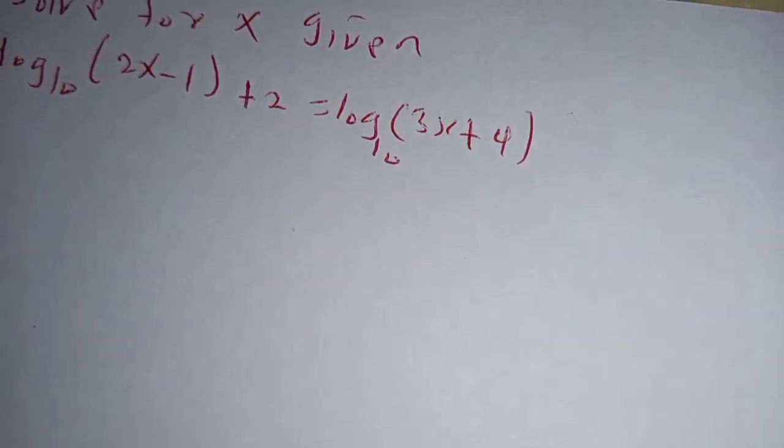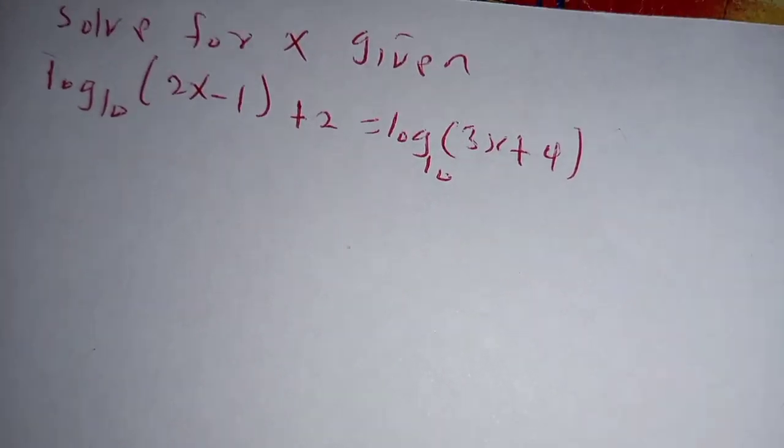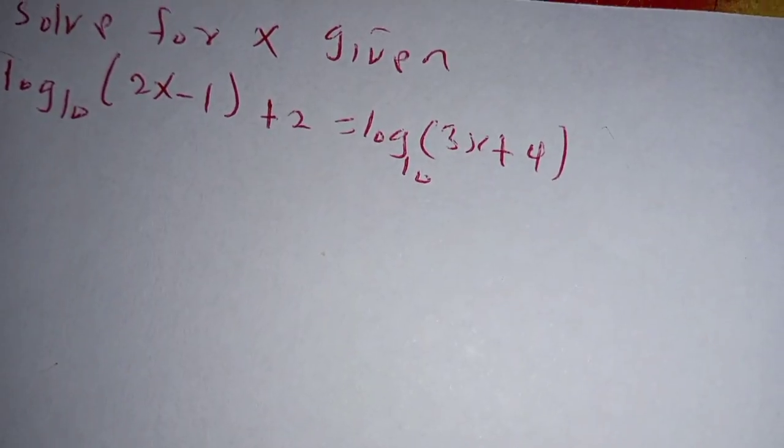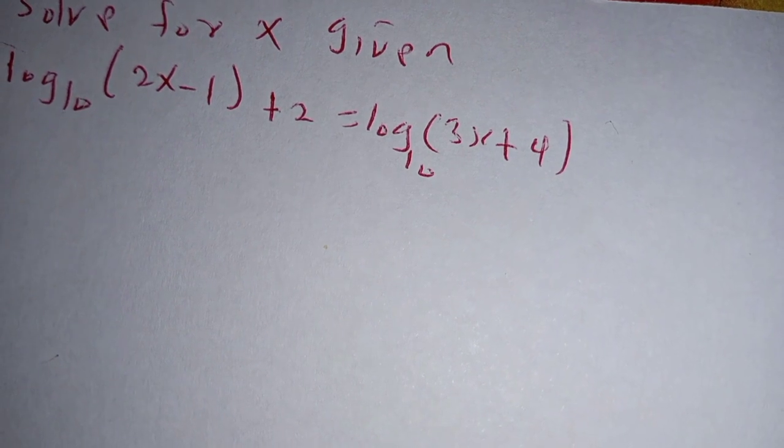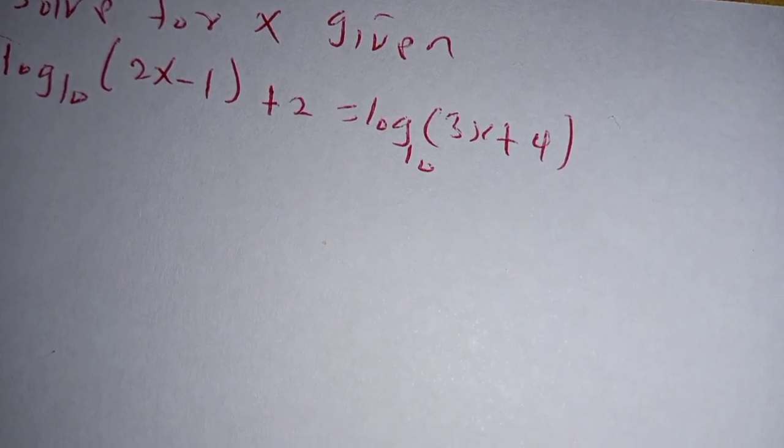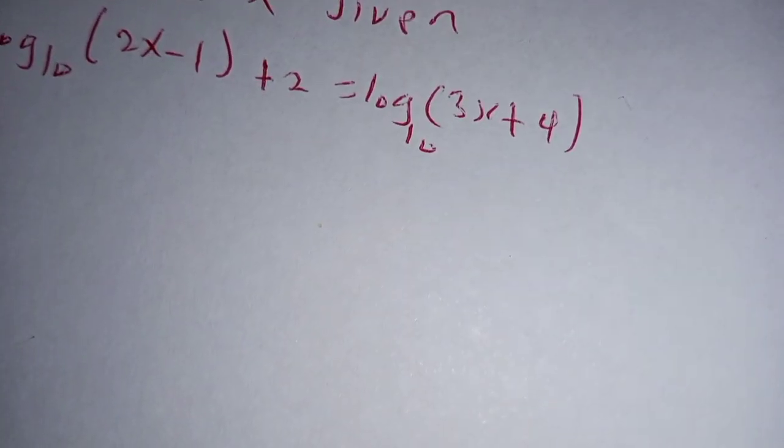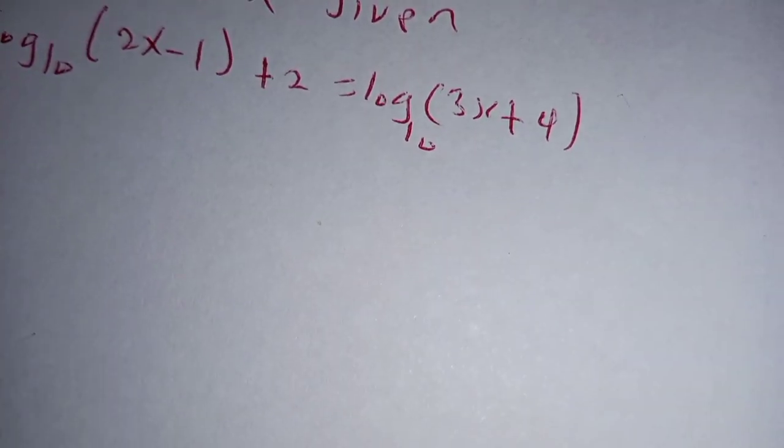So, solve for x given that log to base 10 of (2x - 1) plus 2 is equal to log of (3x + 4) to base 10. First of all, we write 2 in terms of base 10.